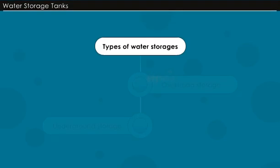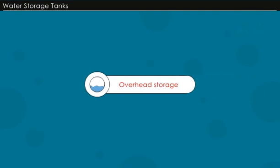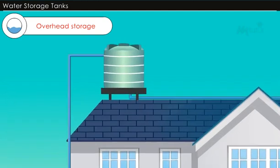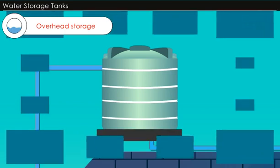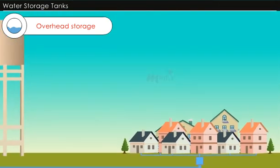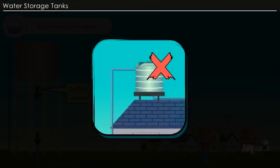Water storage tanks. In general, two types of water storages are required in buildings: overhead storage and underground storage. Overhead storage tanks are those placed on the top of a building or elevated to a certain height with the help of columns. When the city water supply is available at sufficient pressure round the clock, no overhead storage is required.